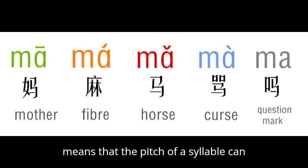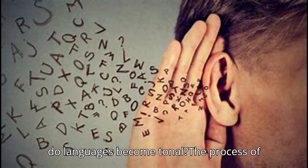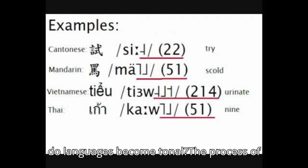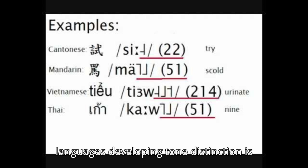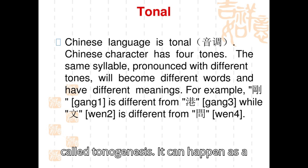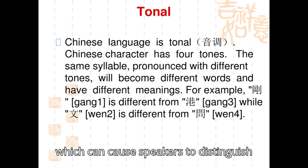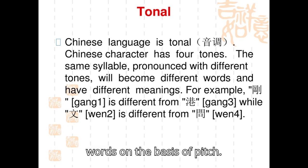Tonal means that the pitch of a syllable can determine the meaning of a word. But how do languages become tonal? The process of languages developing tone distinction is called tonogenesis. It can happen as a result of a loss of particular sounds, which can cause speakers to distinguish words on the basis of pitch.